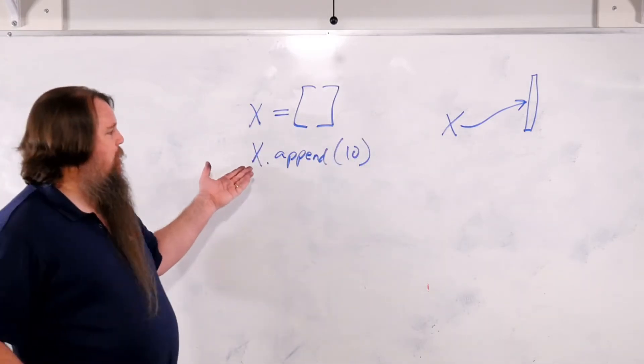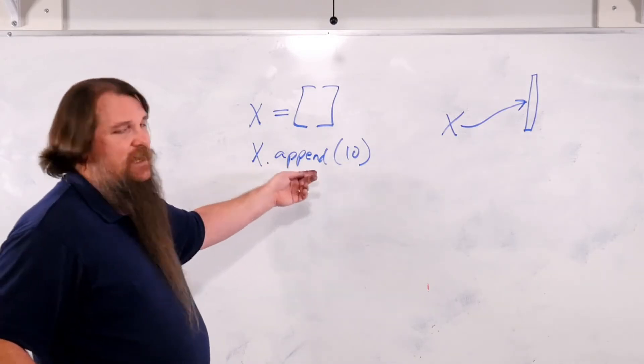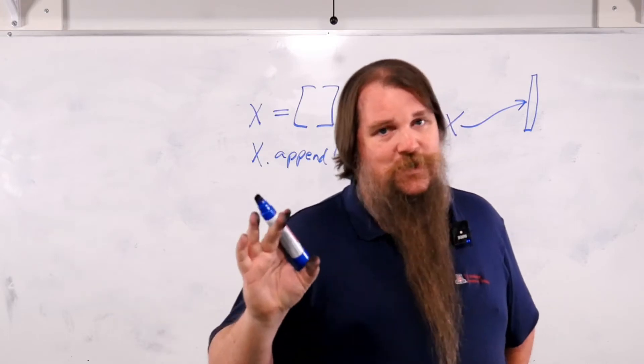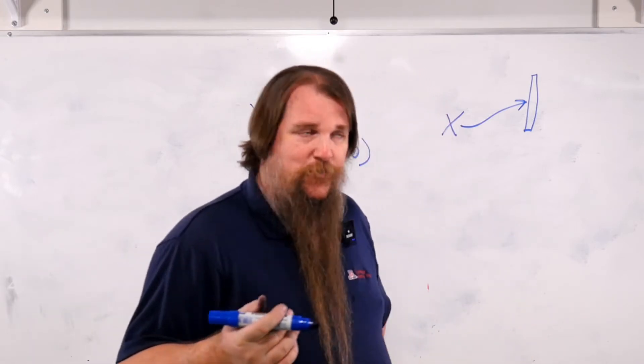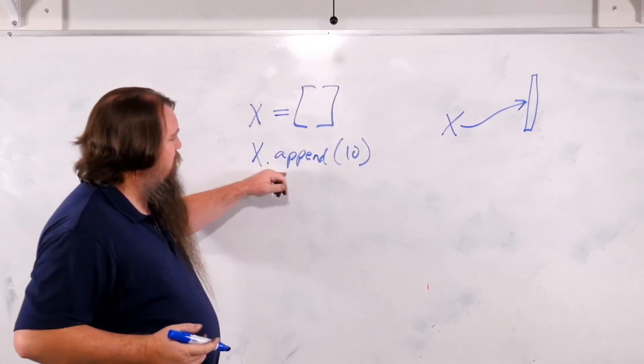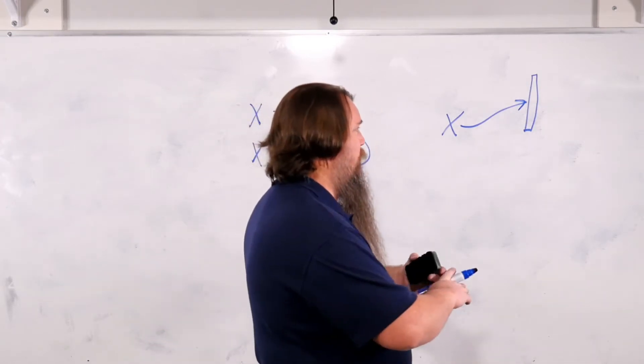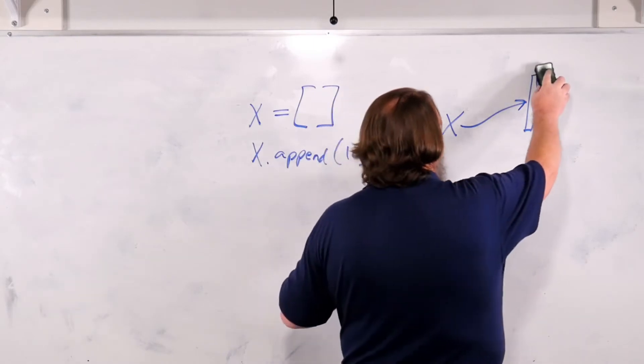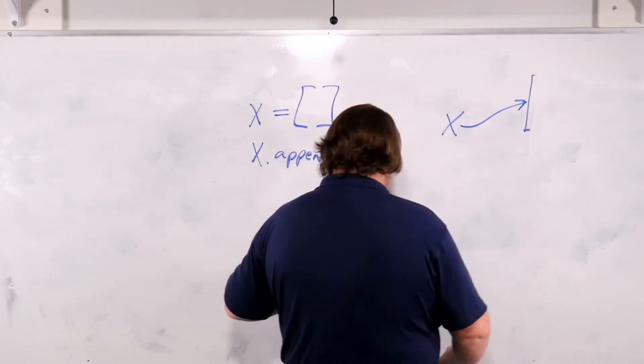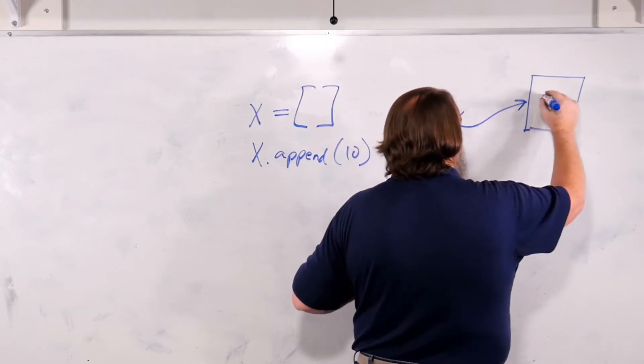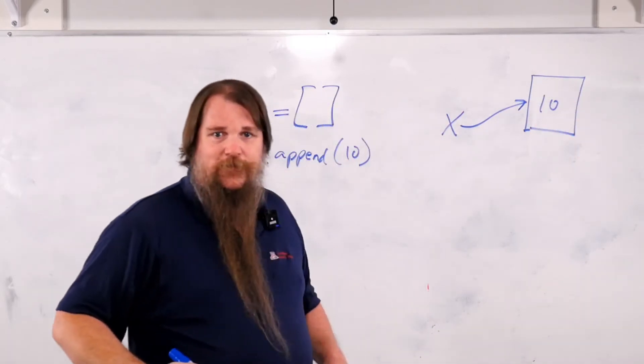Now what's going to happen here is that this append function only works on arrays. Can't use it on strings, can't use it on tuples because they're both immutable. But in an array, what it does is it says don't duplicate the array, don't make any new storage. Instead, take the storage that already exists and make it larger so that now there's space to store something inside of it.